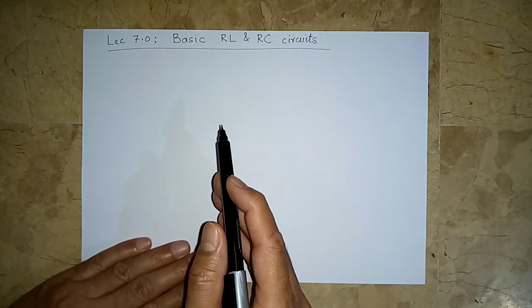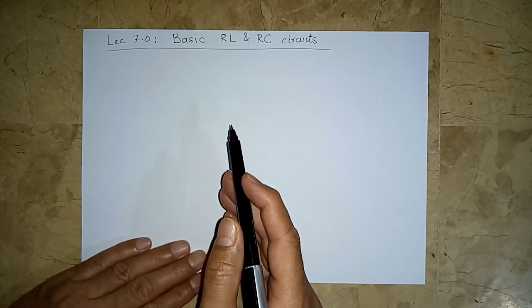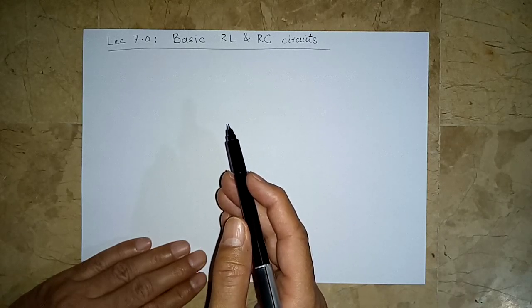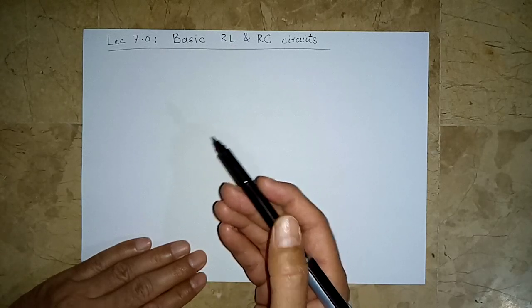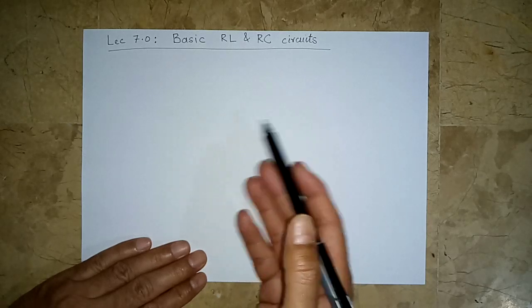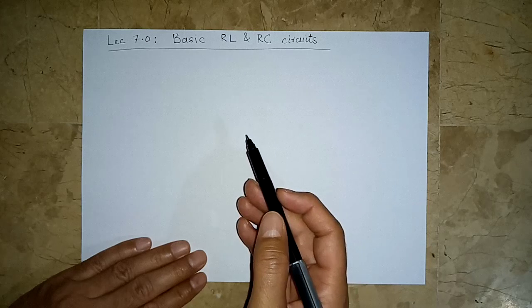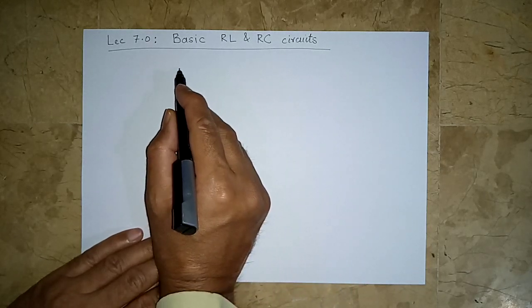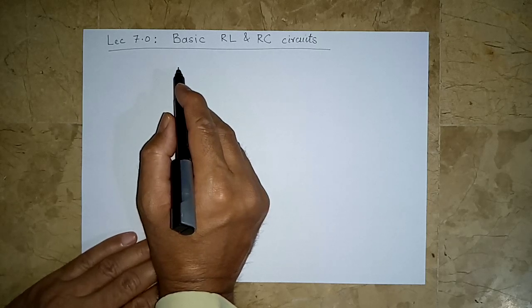You would be required to show your understanding by explaining something that actually happens in the real world, re-explaining it in your own words later on once we are through with this chapter. So let us come to a very basic RL circuit. We are going to consider two types of circuits.